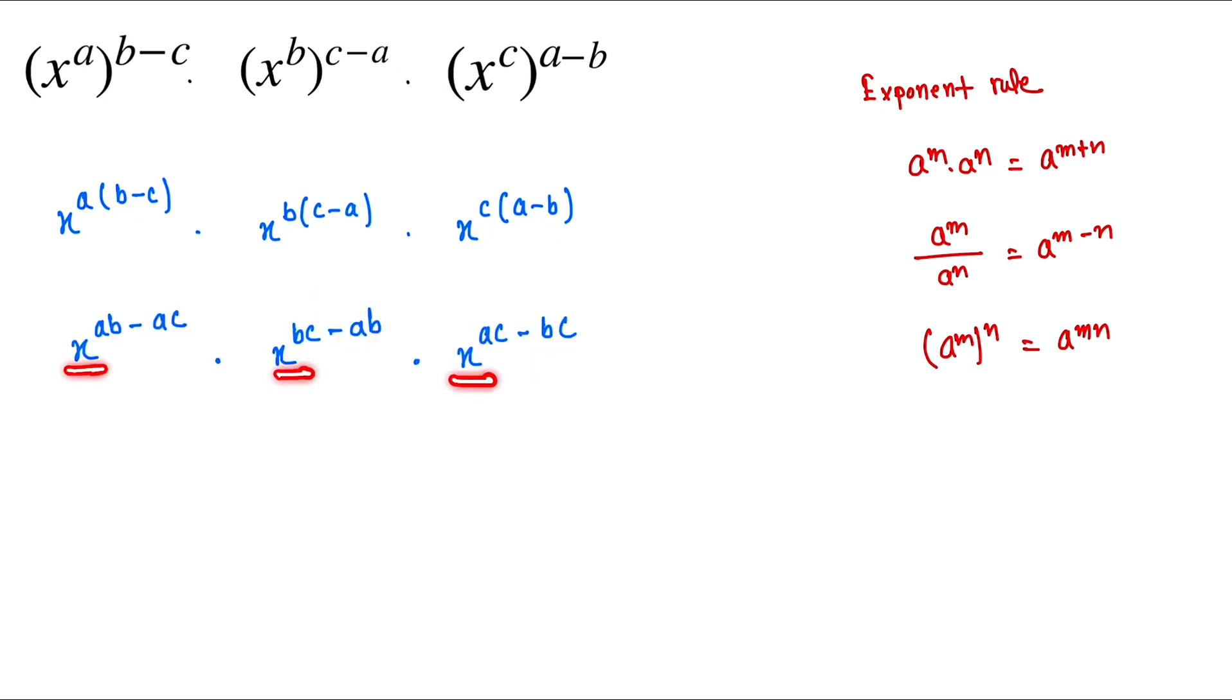Now these all are in multiplication, so we add the power by using this method, this rule, exponent rule. So here is x to the power ab minus ac plus bc minus ab plus ac minus bc.